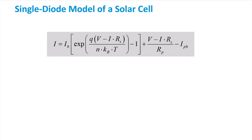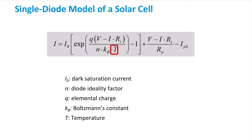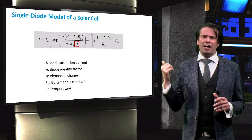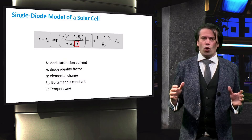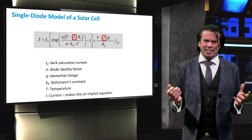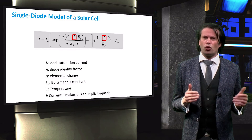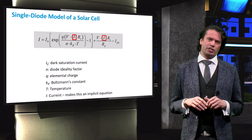Here you can see the equation for the single diode model. I0 is the dark saturation current — there will be a whole video on the importance of this parameter in the future. N is the diode ideality factor; in general this factor is set to 1, representing an ideal diode. Q is the elemental charge of an electron, K is the Boltzmann constant, and T is the temperature. We can also see the values for the photocurrent and the series and shunt resistance. One final interesting note is that we can find I in this equation, which makes the equation implicit, meaning it cannot be solved algebraically. This term only appears next to the series resistance term, so if we model the solar cell as ideal, this term would disappear and make the equation easier to solve.